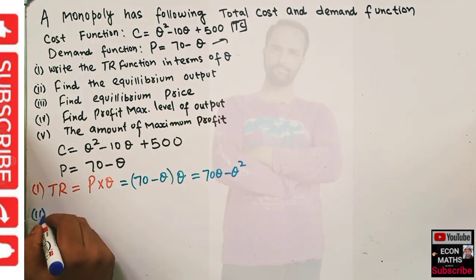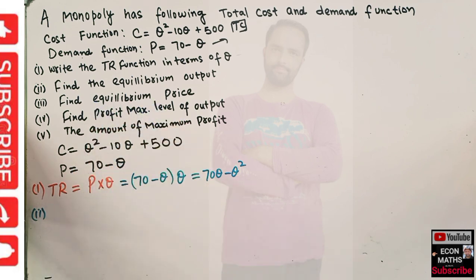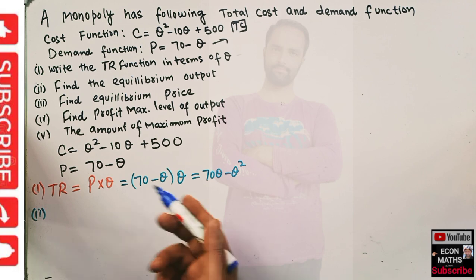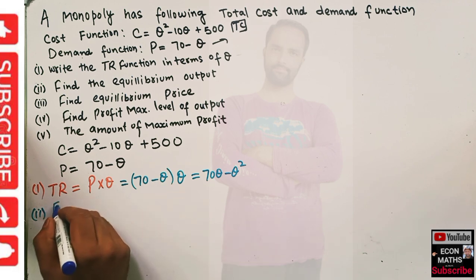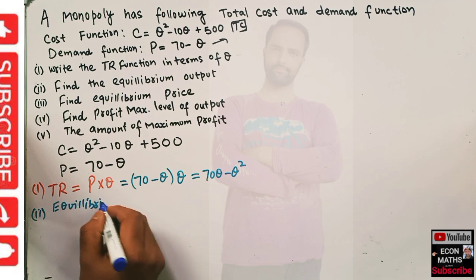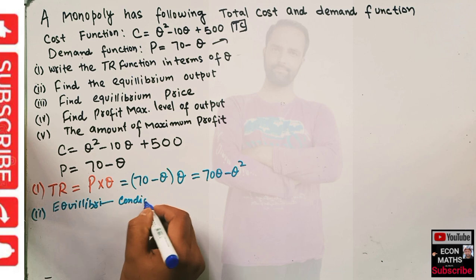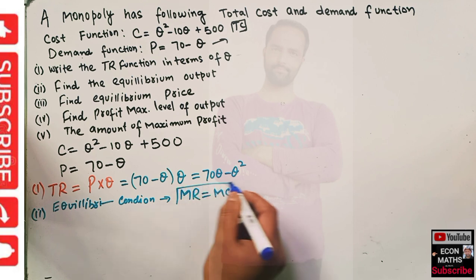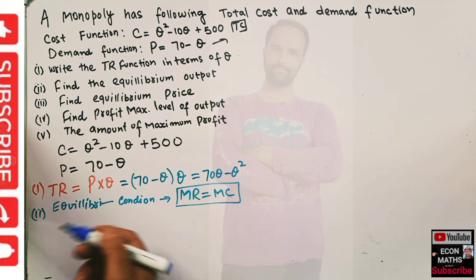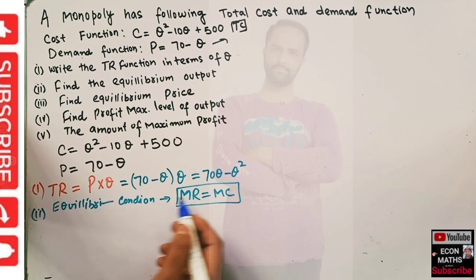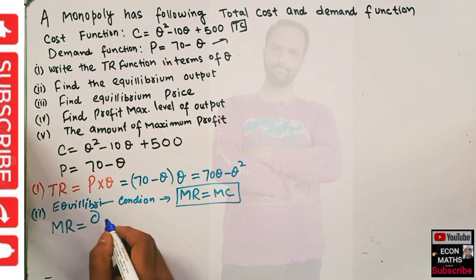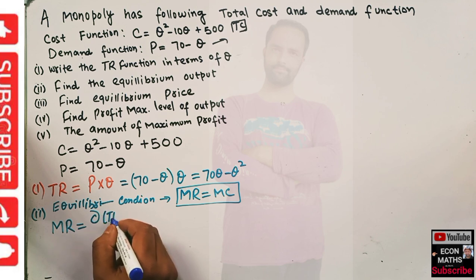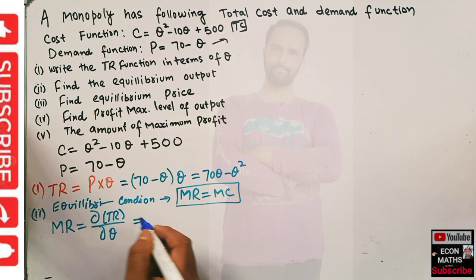The second part is to find the equilibrium price. For that we need to find the equilibrium condition. In the case of monopoly, our marginal revenue should be equal to marginal cost — this is the equilibrium condition. Marginal revenue is simply the derivative of the total revenue function with respect to quantity.